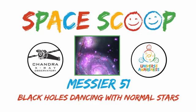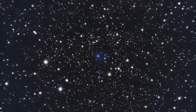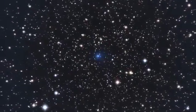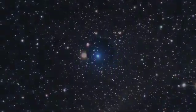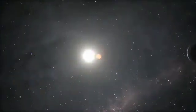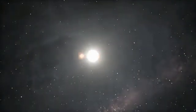Space Scoop! Most of the stars in the Milky Way galaxy are not like our Sun, floating through space alone. A whopping 8 out of 10 of them have one or more companion stars. A pair of stars orbiting each other is called a binary system.